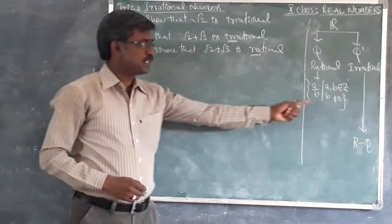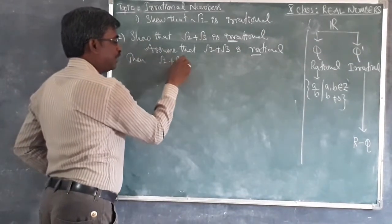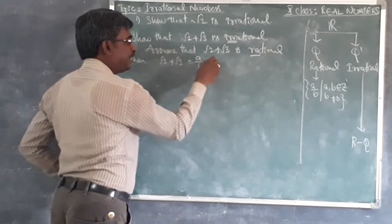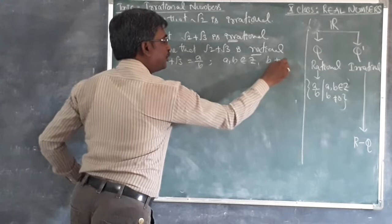Now by the definition of rational number, then this root 2 plus root 3 is equal to A by B, where A, B are integers and B not equal to 0.